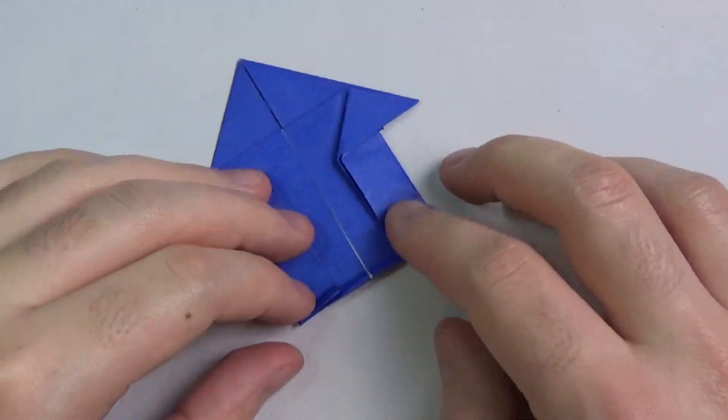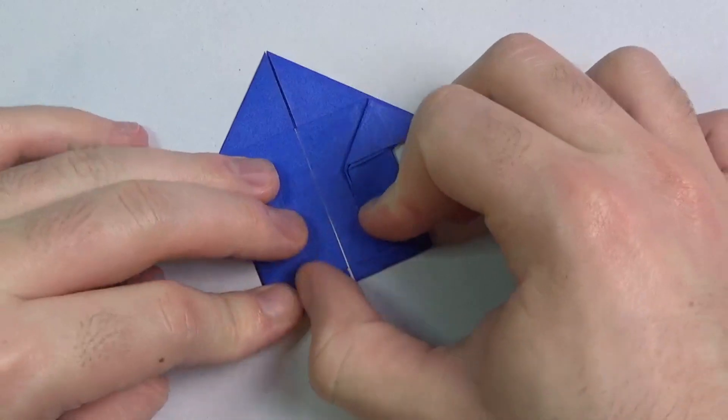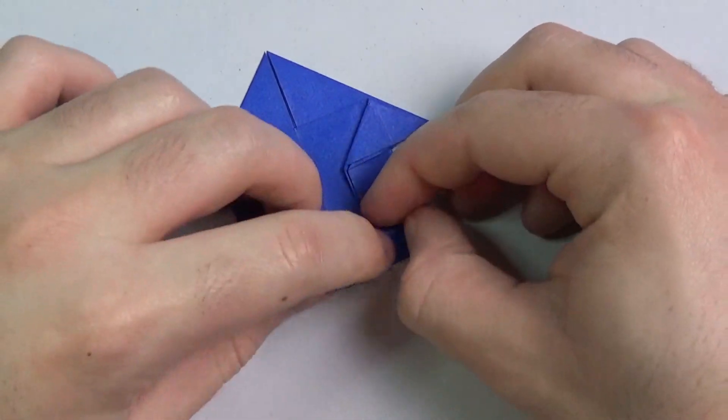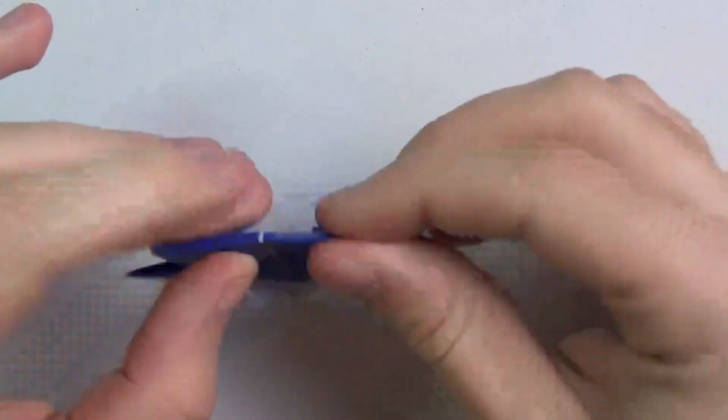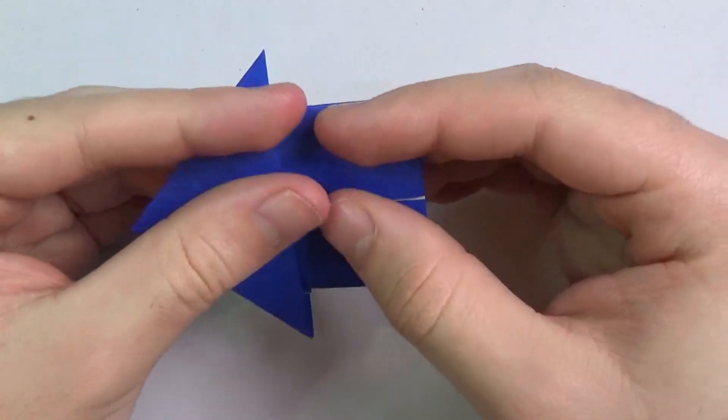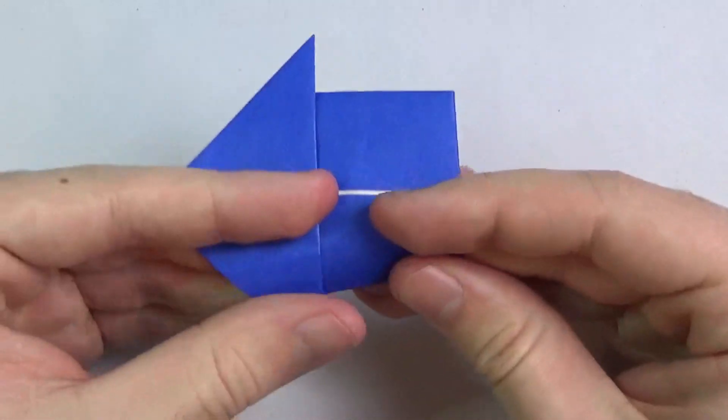Just about like this, so that way it keeps the model closed which will make it fly better. See, just crease it as sharp as possible. Alright, and now let's give it some curvature. This is also what makes it fly a little bit better. See, give it some curvature like this.